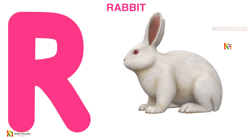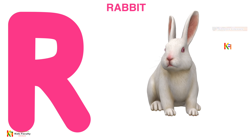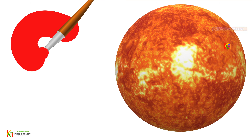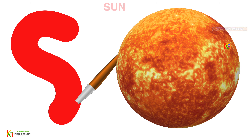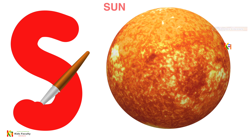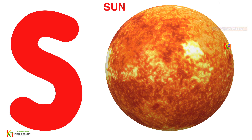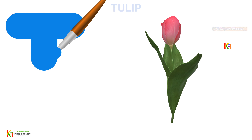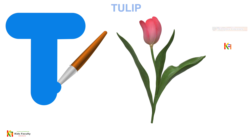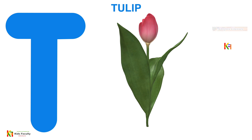A, B, C, D, E, F, G, S for sun, Q, R, S, T, U, V, W, X, Y, Z — now I know my ABCs.